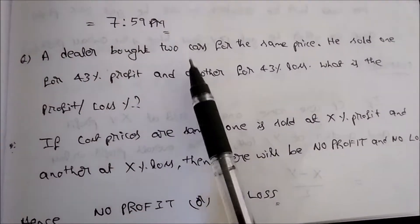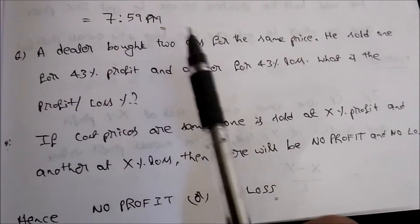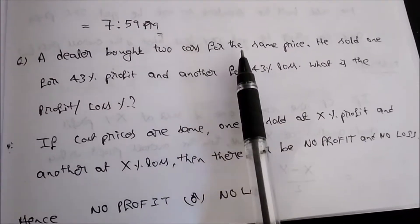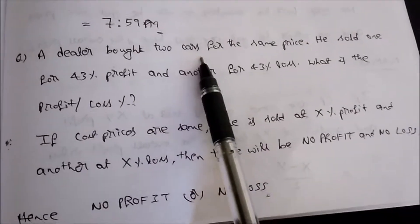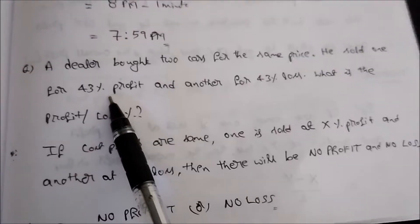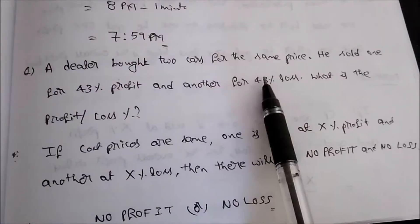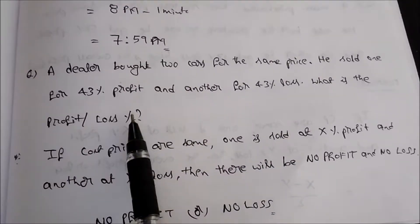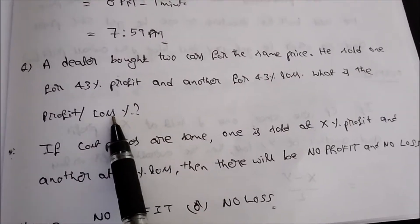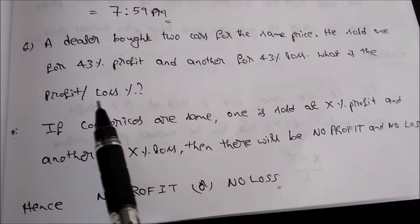The question is a dealer has bought two cars for the same price. That is, the cost price of the two cars is same. He sold one at 43% profit and another at 43% loss. Here, 43%, 43%. Now we need to find out whether it is a profit or loss for him.